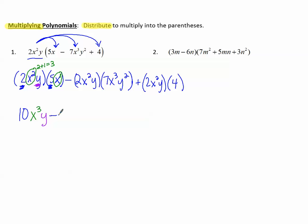Minus. And now, 2 times 7, 14. And then, looking at the x's. x² times x³. 2 plus 3 makes 5. So x to the fifth. And this time, we do have y times y². This is like y to the first. So that's like 1 plus 2 to get y³.